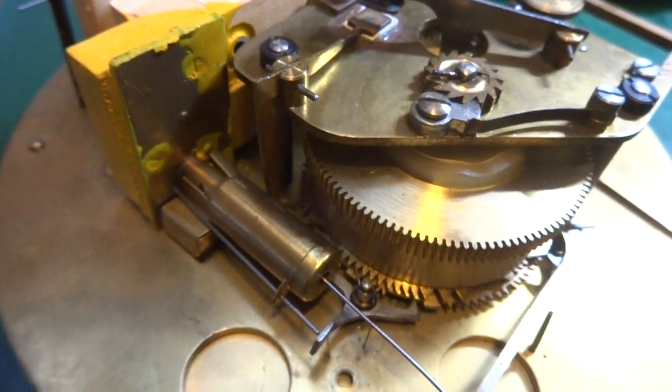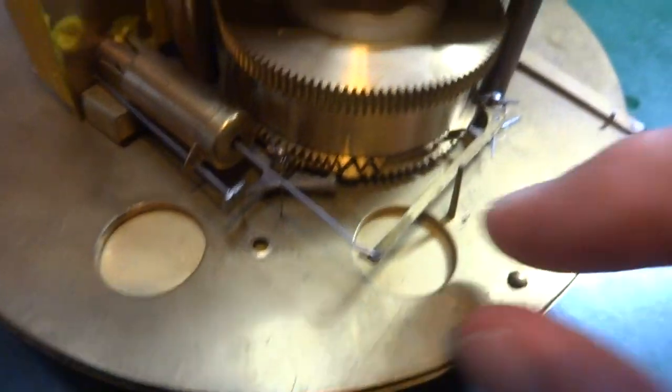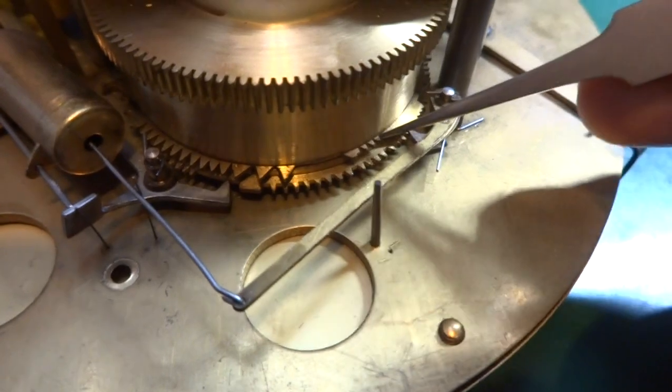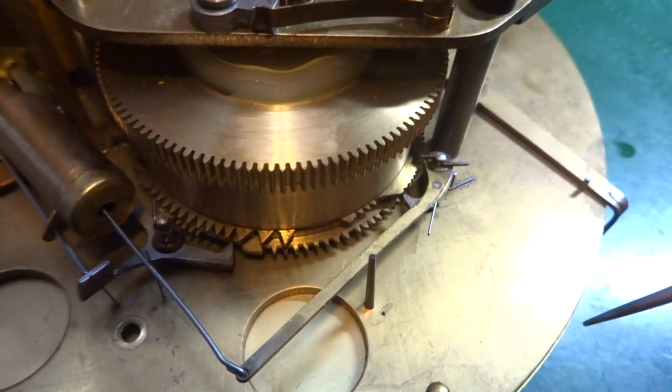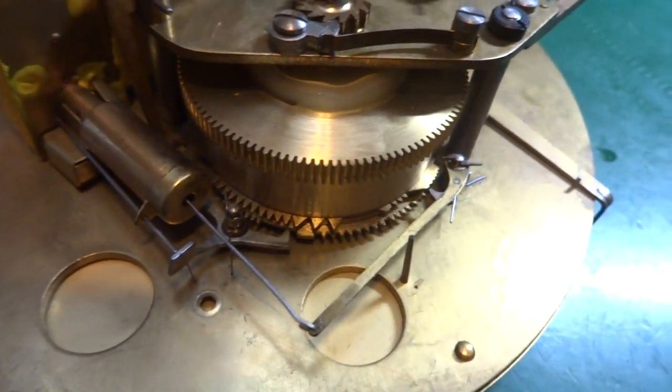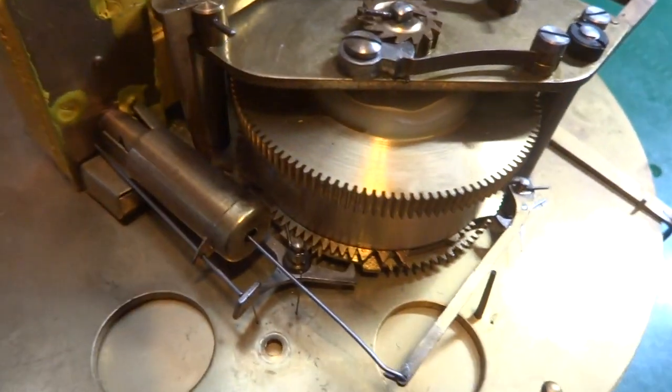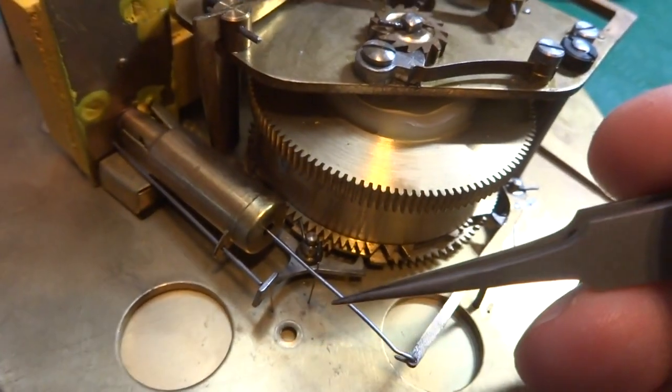Now I'm going to stop it. What we have here is this lever rides against cams that are fitted on the bottom of the mainspring barrel, and those cams allow this lever to go in and out.